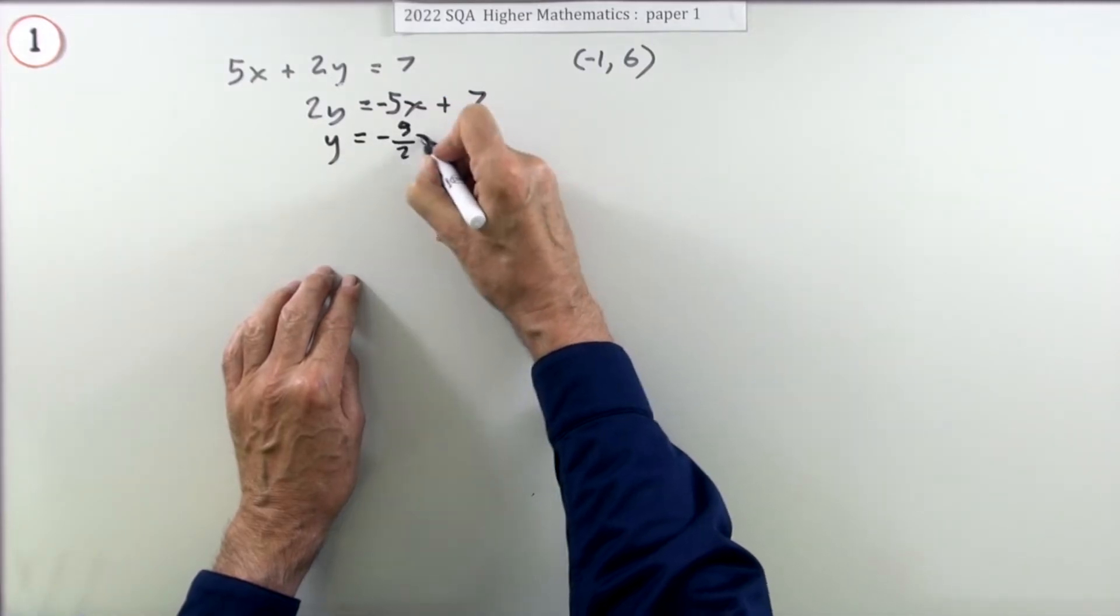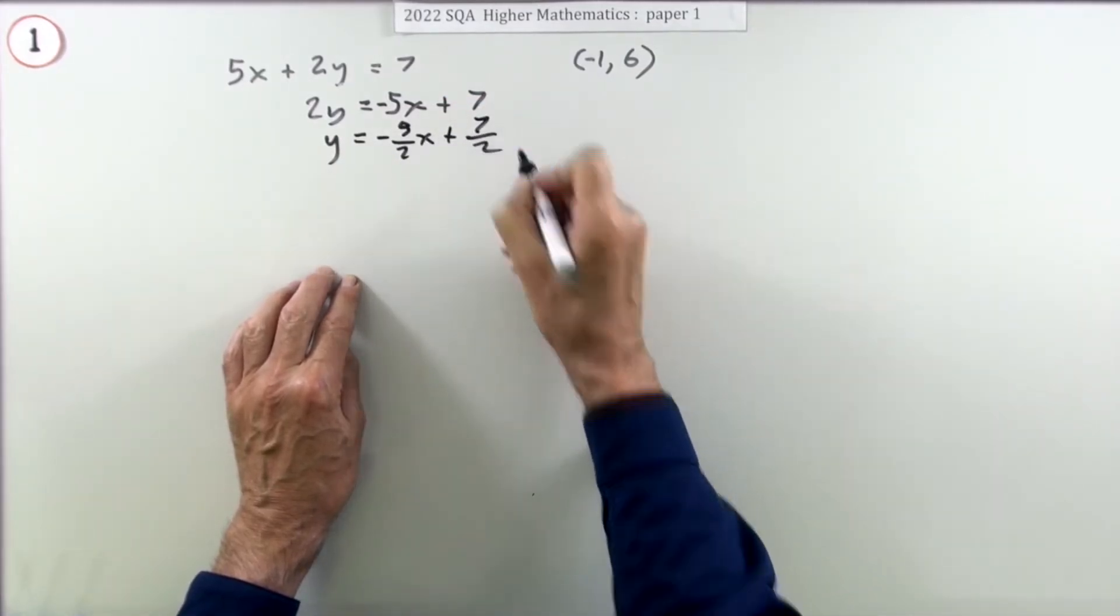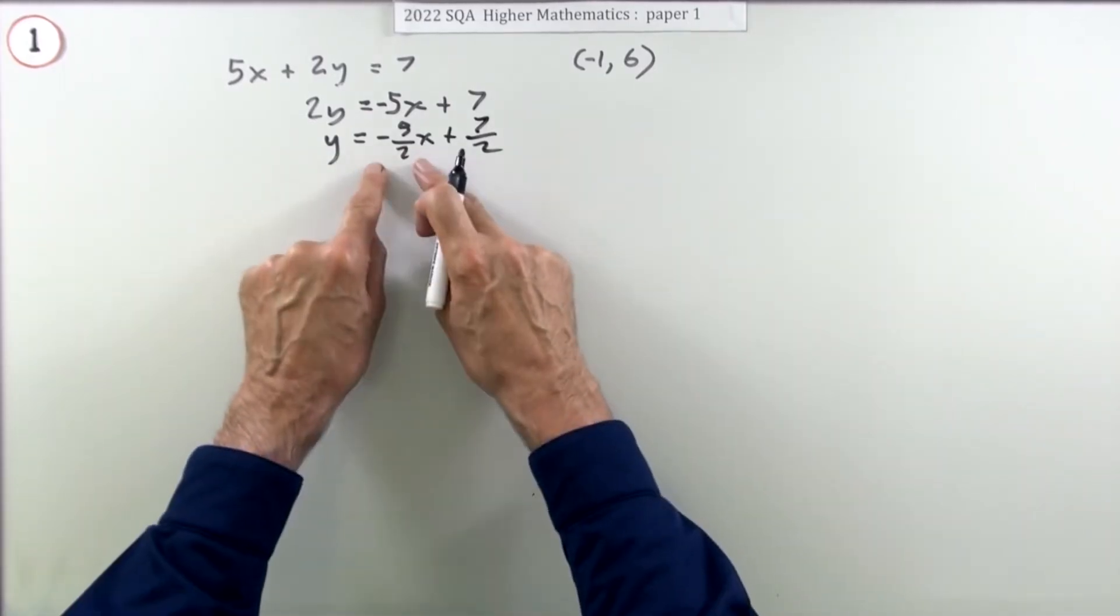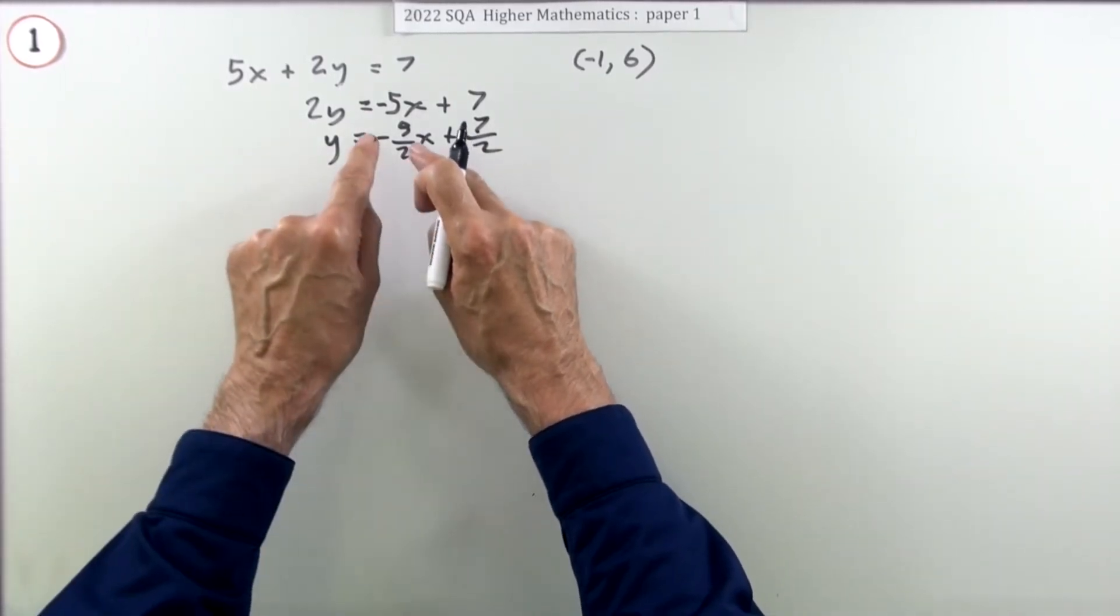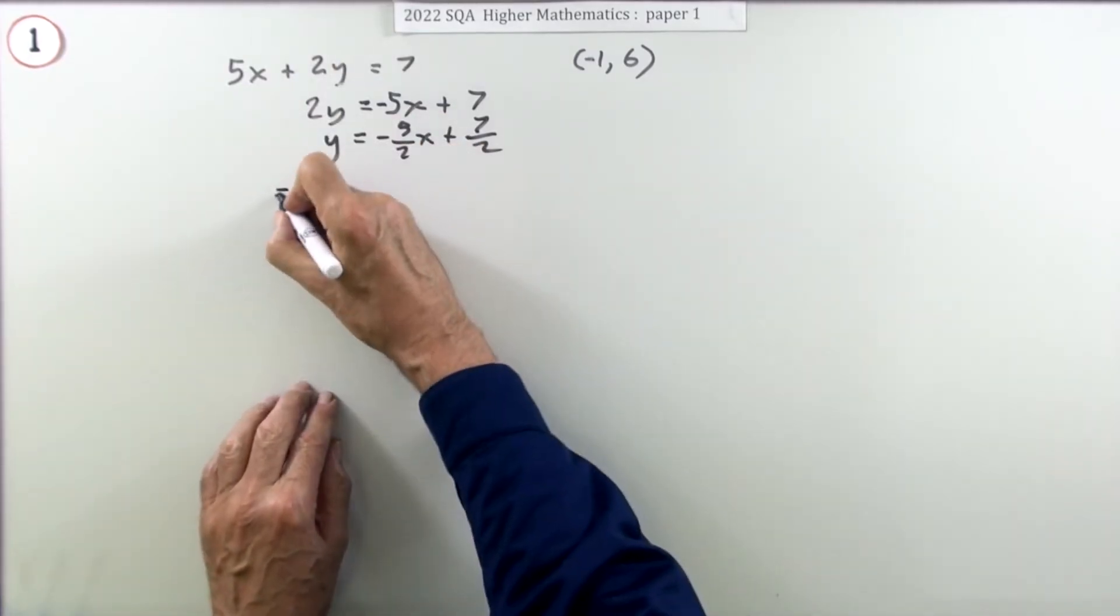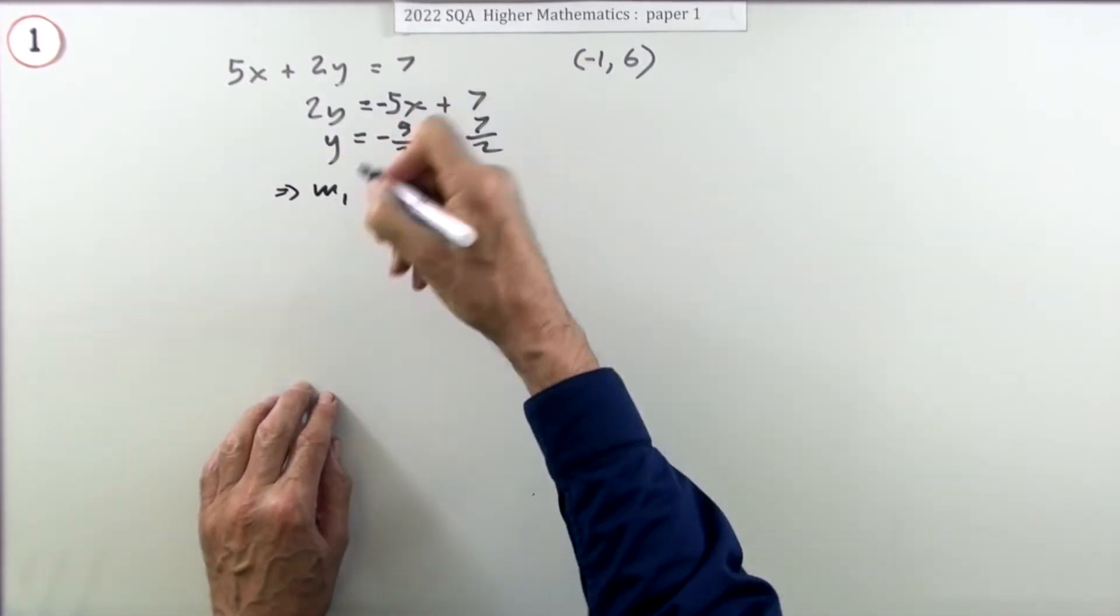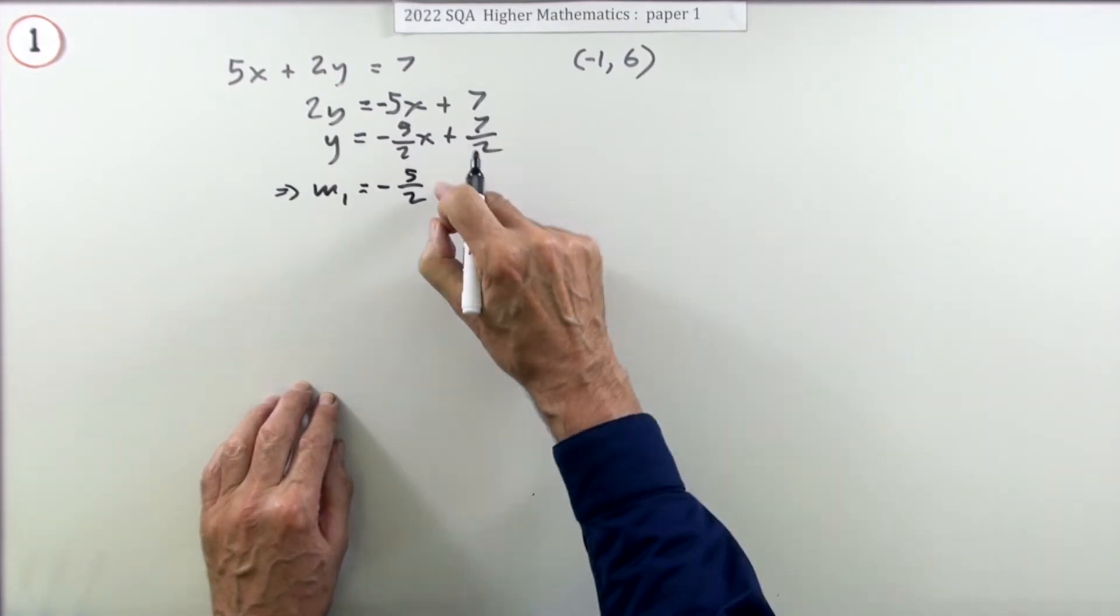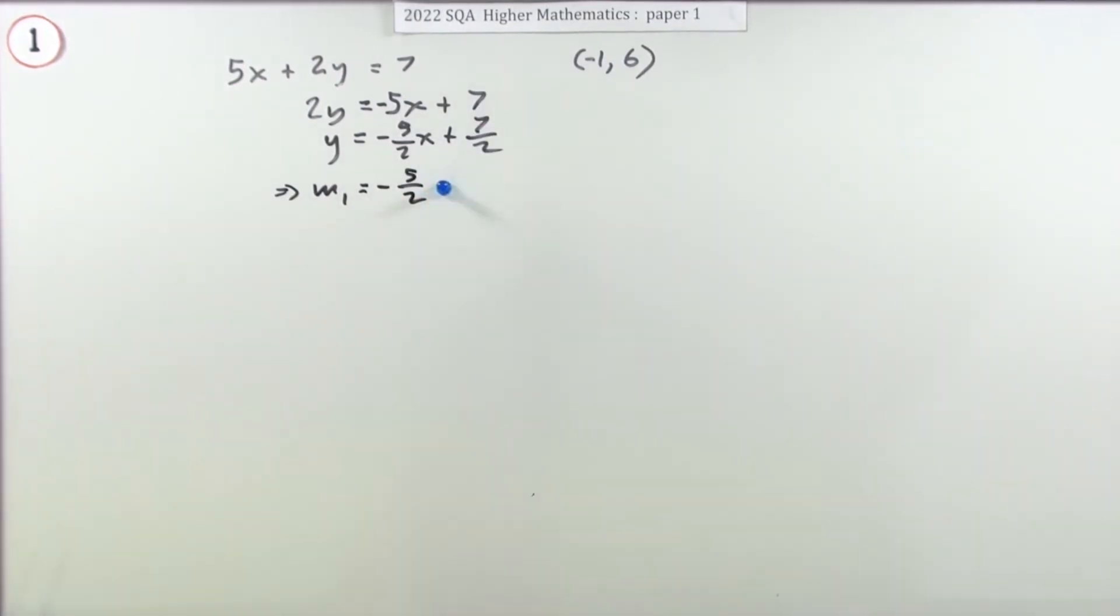So it'll be minus 5 upon 2x plus 7 upon 2, which you're not really interested in. That's the bit you're interested in - what's the coefficient of x? It's negative 5 upon 2. The gradient of this line, which I'll call m1 because it's the first line, is negative 5 upon 2. Doing that gets the first mark.